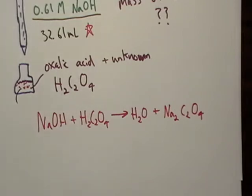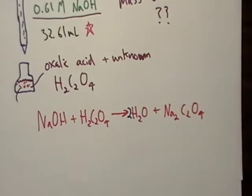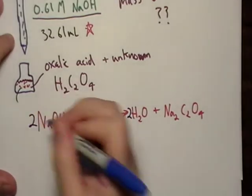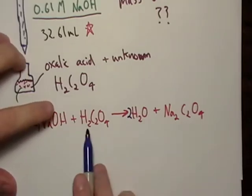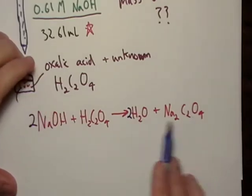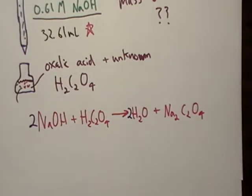So let's make sure we've balanced this equation too. It looks like I'm going to need another water, and it looks like I'm going to need another sodium. So am I balanced? I got six oxygens, I got six oxygens over here, four hydrogens. Yes. Okay, good. All right, so I'm balanced.